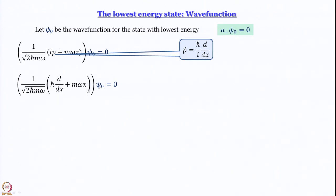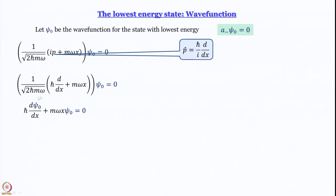We can get rid of the prefactor 1/√(2ℏmω) since it is not zero, so the rest must equal zero. What we get is: ℏ·dψ_0/dx + mωx·ψ_0 = 0 — a simple first-order equation. Most of you would be able to solve it, but we will go through it anyway.